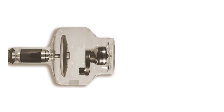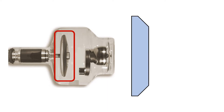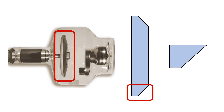Most anodes, like this one, are shaped like beveled disks. Here we have a drawing of the anode, and here we have a small section of the anode.